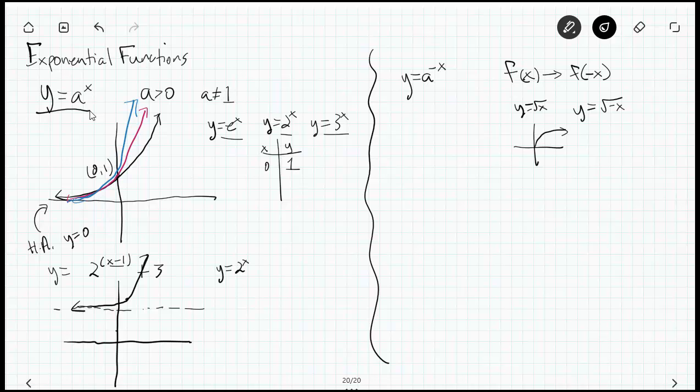Well, for example, y equals root x versus y equals root negative x. Well, this guy looks like this and this guy looks like this. It reflects it across the y-axis. If I want to reflect across the x-axis, then I put the negative in front. So all that I do, if I do for example y equals 2 to the negative x, I just take my original 2 to the x, remember, passing through 0 comma 1, and instead—